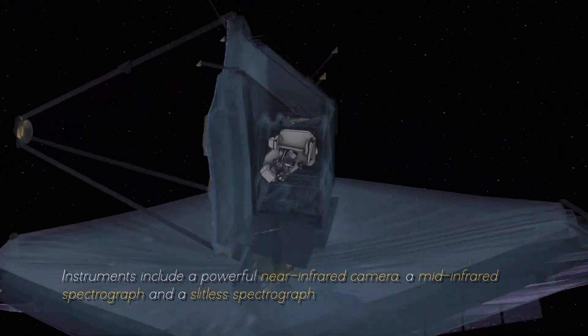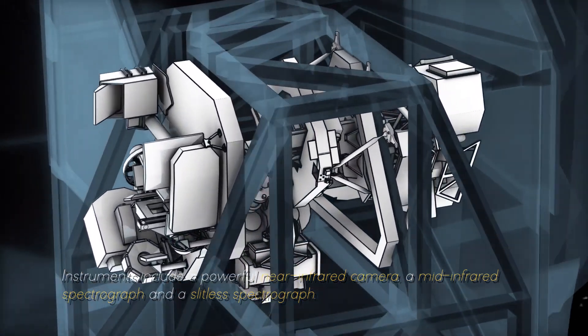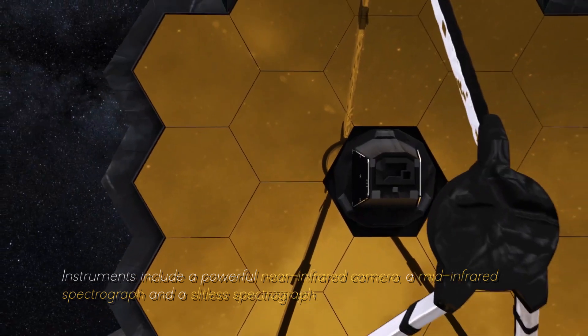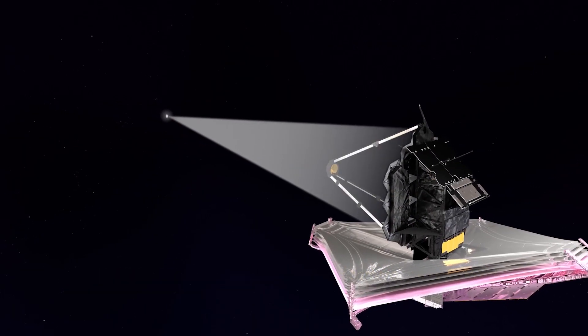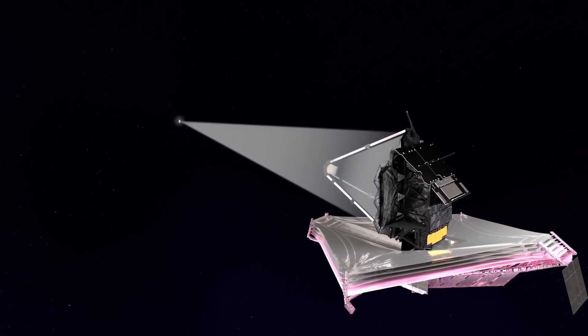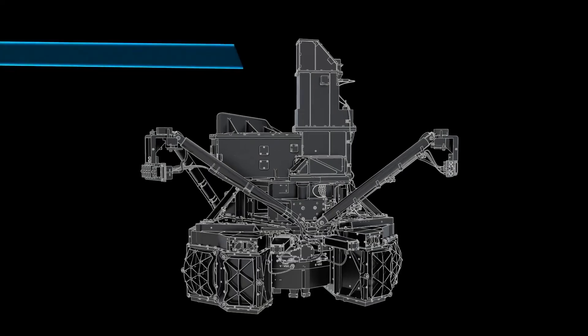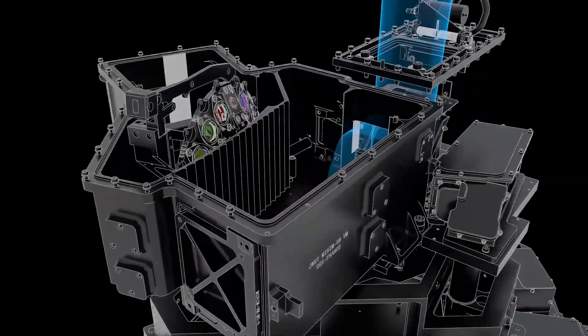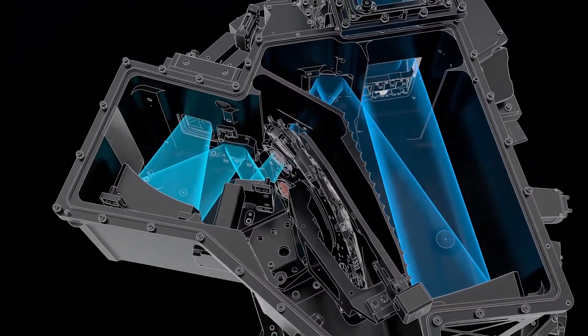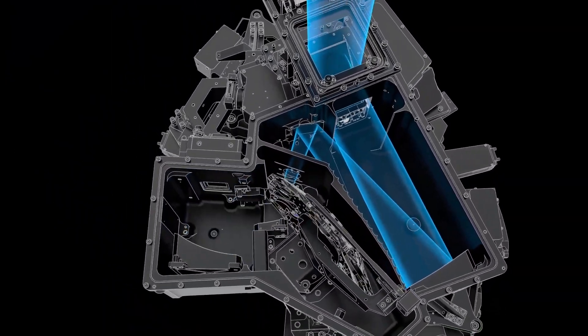This allows the JWST to collect and focus light from distant celestial objects with unmatched precision and sensitivity. Instruments include a powerful near-infrared camera, a mid-infrared spectrograph, and a slitless spectrograph. These instruments work together to capture images, measure spectra, and study the properties of objects ranging from the oldest galaxies to the planets of our solar system.